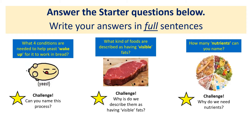A challenge with that: can you name this process? The other question being: what kinds of foods are described as having visible fats? Take that word literally — what does 'visible' mean? Looking at that steak, can you describe what kinds of foods have visible fats? And the challenge below: why do we describe them as having visible fats?